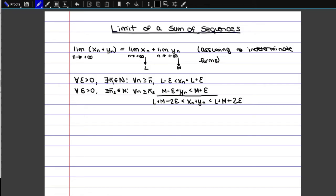So we can say that if we take the maximum of n bar 1 and n bar 2, and we call it n bar, for every n after that point, then this will be satisfied. And so this implies that xn plus yn converges to L plus M, or the limit of xn plus yn is just L plus M. Same thing.